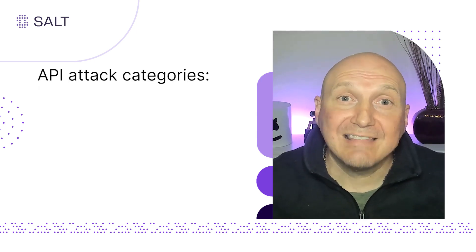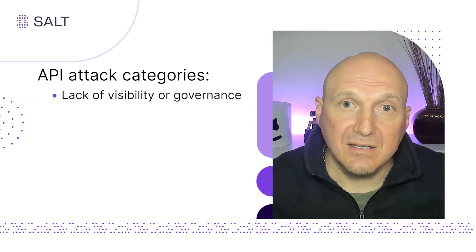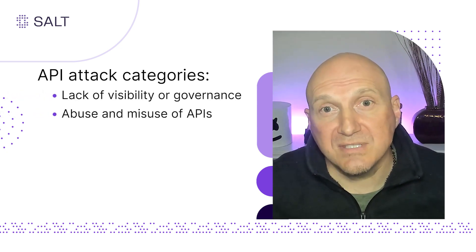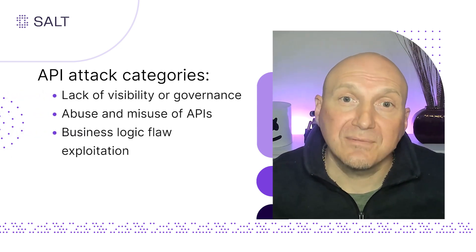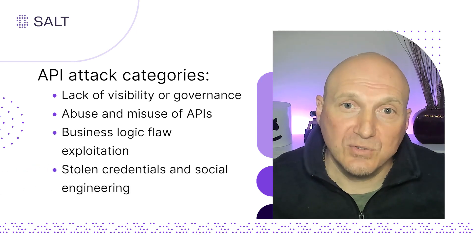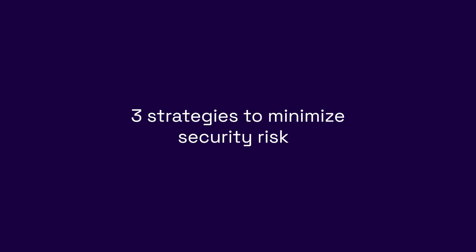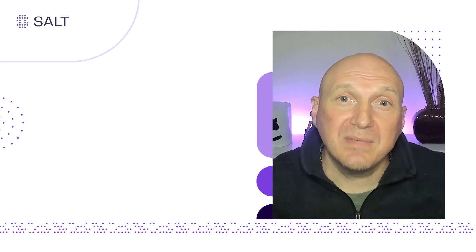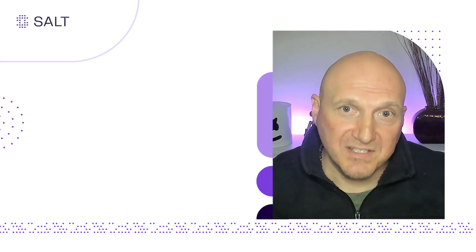They include lack of visibility or governance, abuse and misuse of APIs, business logic flaw exploitation, stolen credentials, and social engineering. Don't despair. There are things you can do to help minimize API security risk in your organization.